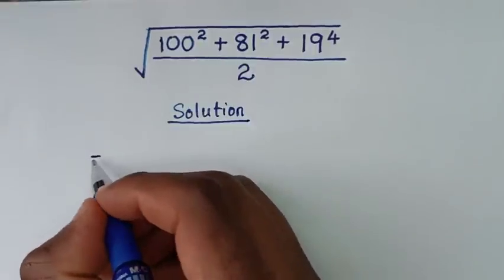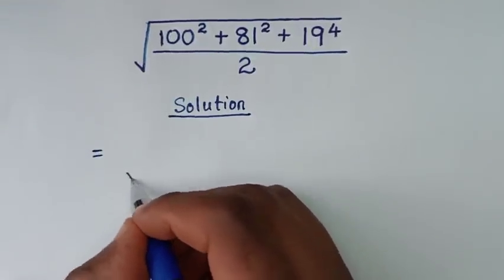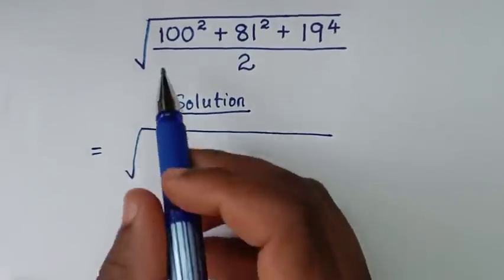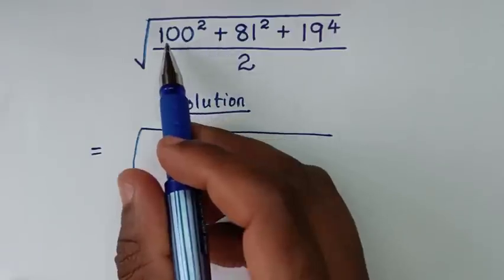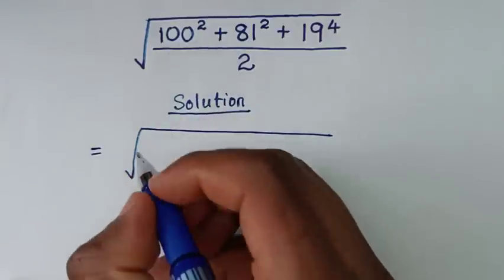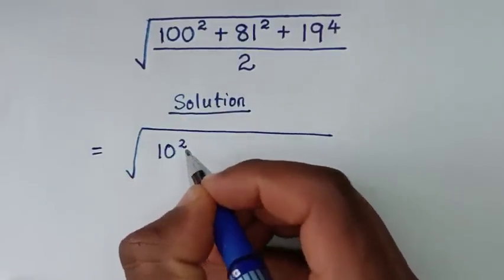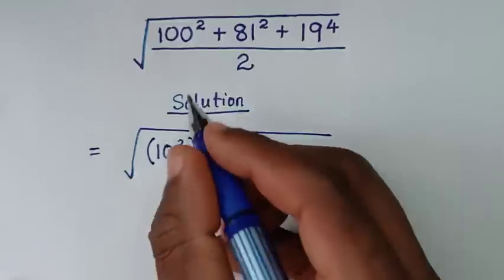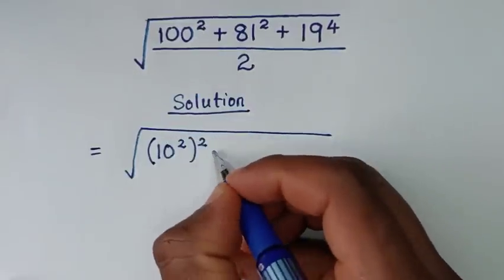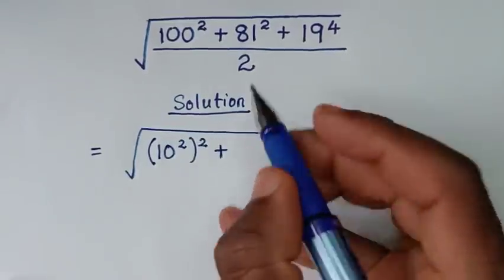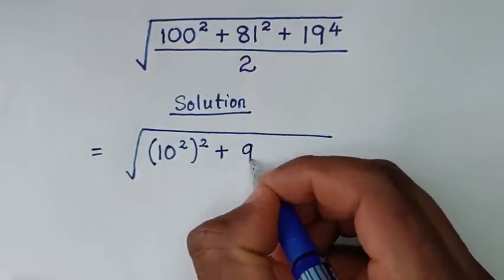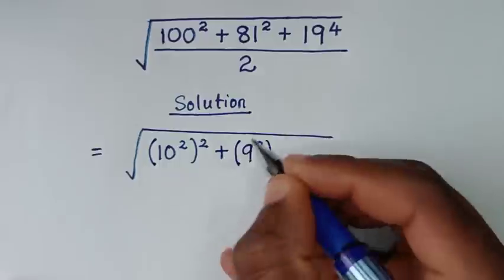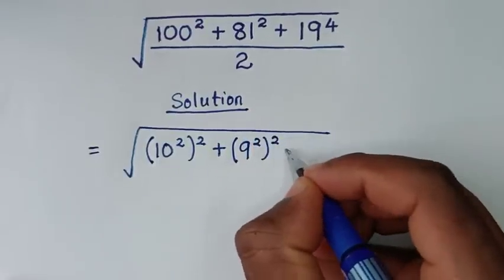It will be equal to the square root of 100 — this 100 is the same as 10 squared, so we write (10²)², then plus 81 — 81 is the same as 9 squared — so we write (9²)².